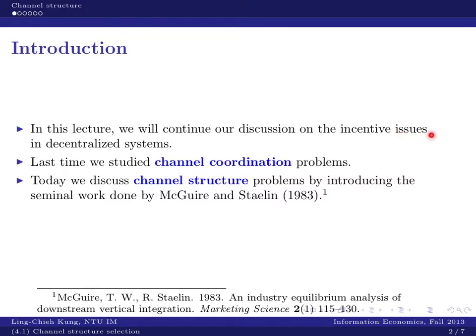The topic is about incentive issues in decentralized systems. We know that when a system is decentralized — when people do not make decisions together for the system's purpose — there will be some incentive misalignment issues. Last time we talked about channel coordination problems: how we may design different contract forms to induce system-optimal or channel-optimal behaviors.